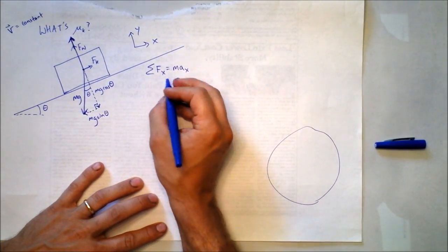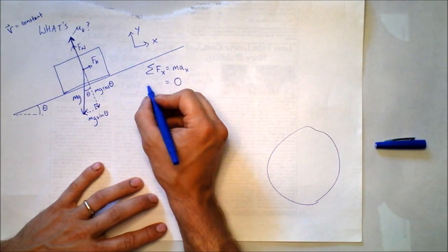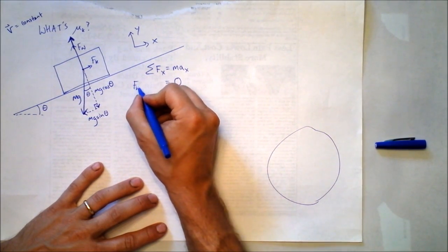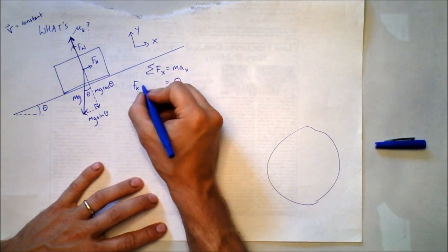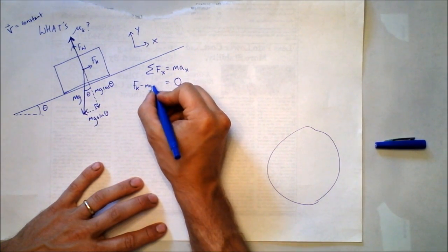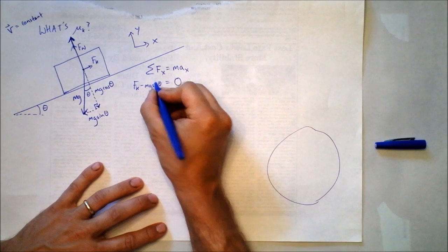On the left side of the equation, we need to add up all the forces that act in the x direction. So we've got f sub k in the positive x direction, and then mg sine theta in the negative x direction, mg sine theta.